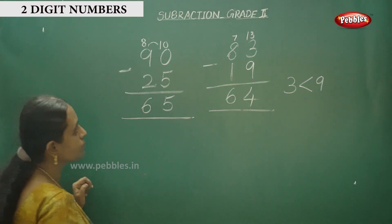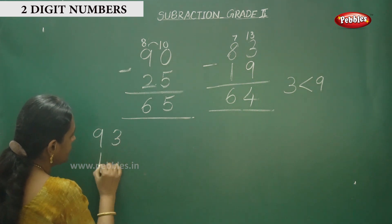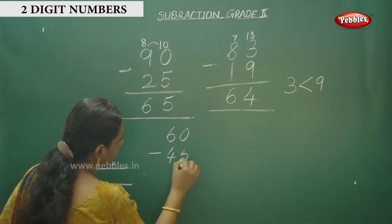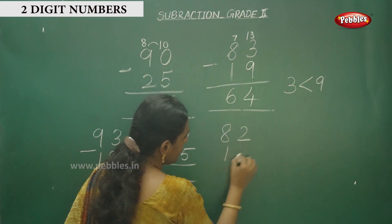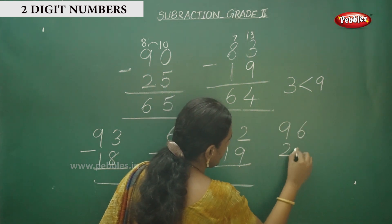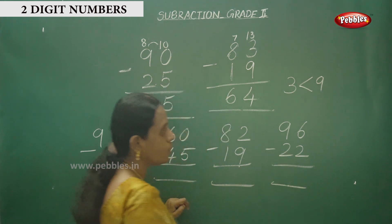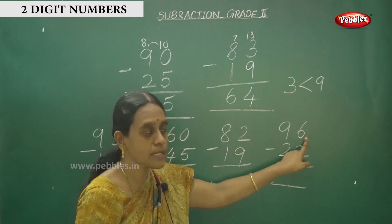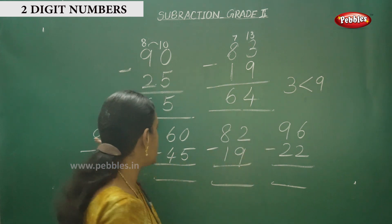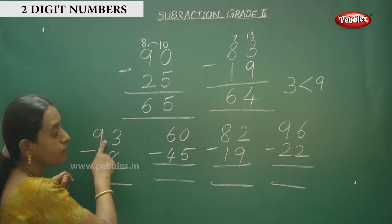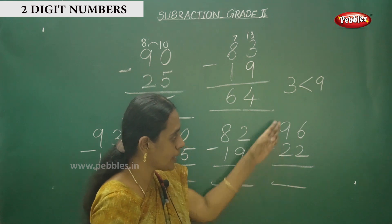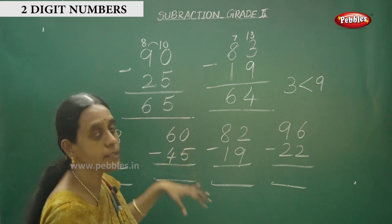I will give some more practice sums for you children. That is 93 minus 18, similar way. 60 minus 45 and 82 minus 19. 96 minus 22. This is no need for borrowing children. Observe this number - this one is the bigger number, so directly you have to subtract this sum without borrowing. For these 3 sums you have to use borrowing method. And simply you have to do it, direct subtraction: 6 minus 2 and 9 minus 2. Practice it and understand and do the practice sums.